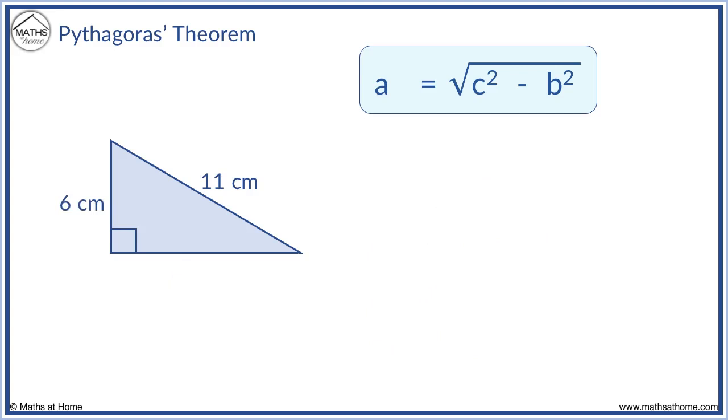11 centimetres is the hypotenuse. And 6 centimetres is one of the shorter sides. We label the missing shorter side a. Next we use the formula and substitute in the known values. c is always the hypotenuse, which is 11. b is the known shorter side, which is 6.